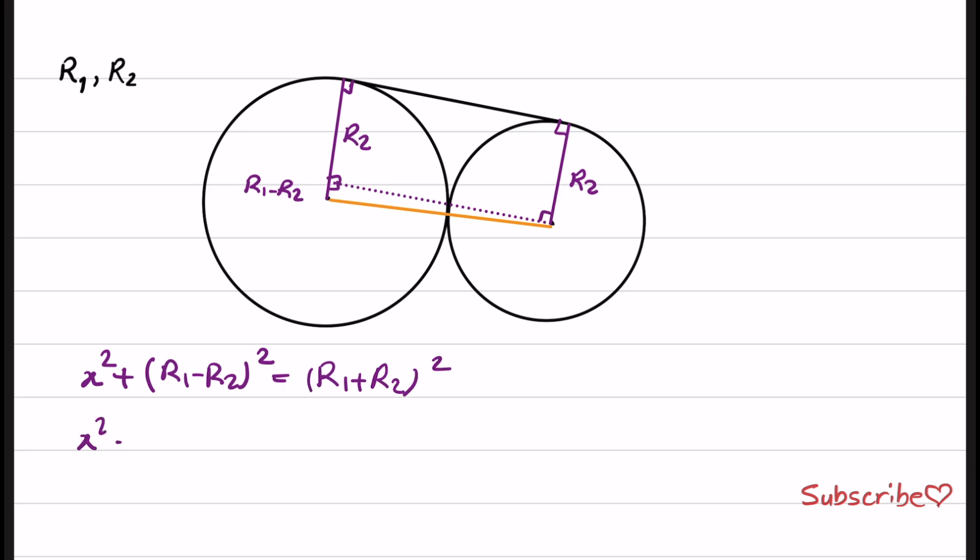So x squared equals r1 squared plus r2 squared plus 2r1r2 minus r1 squared minus r2 squared plus 2r1r2. Therefore, x squared equals 4r1r2. x equals 2 times the square root of r1r2.